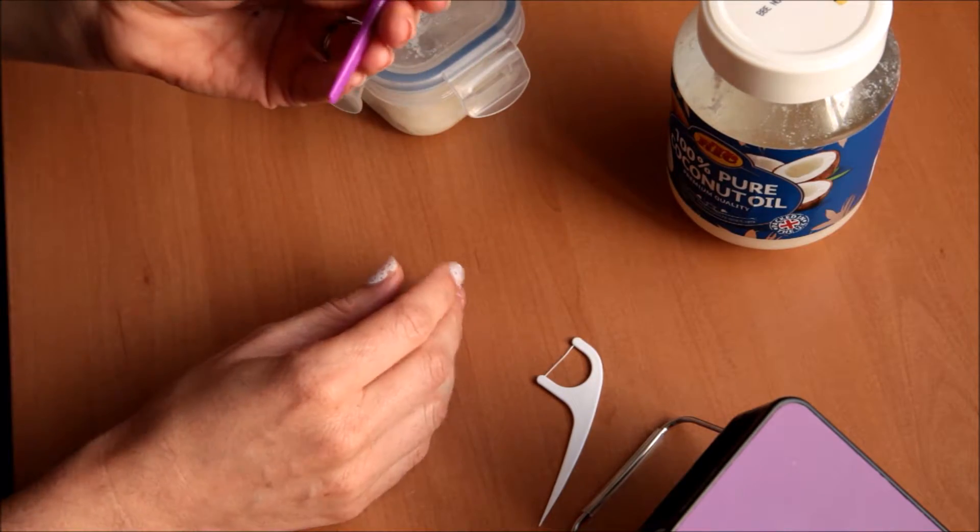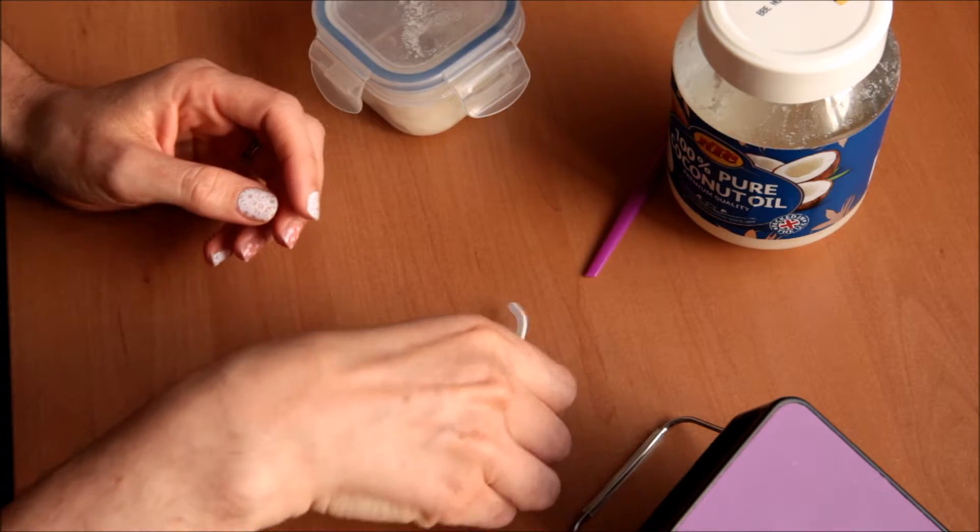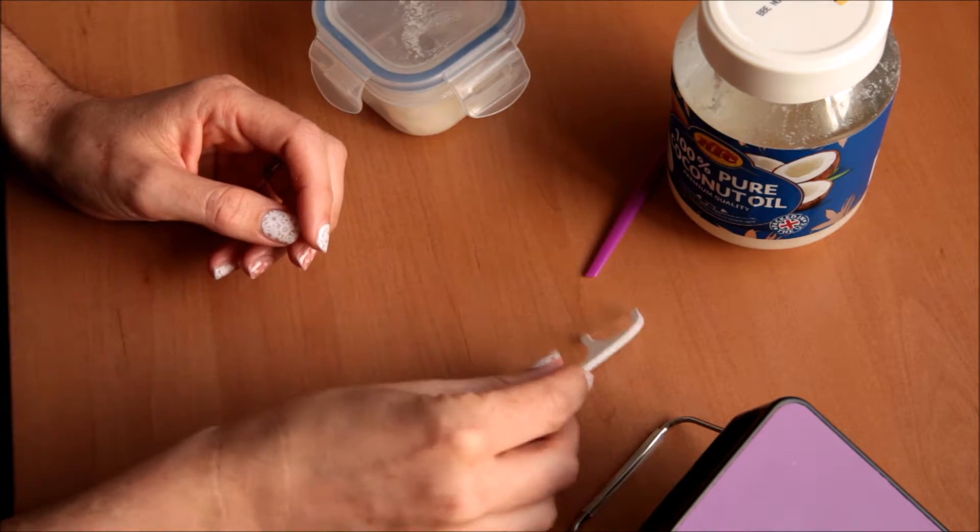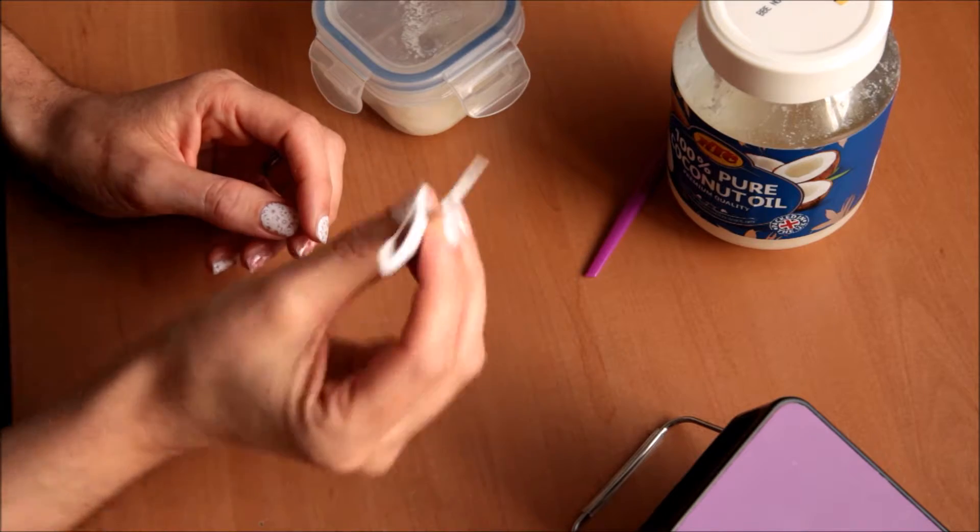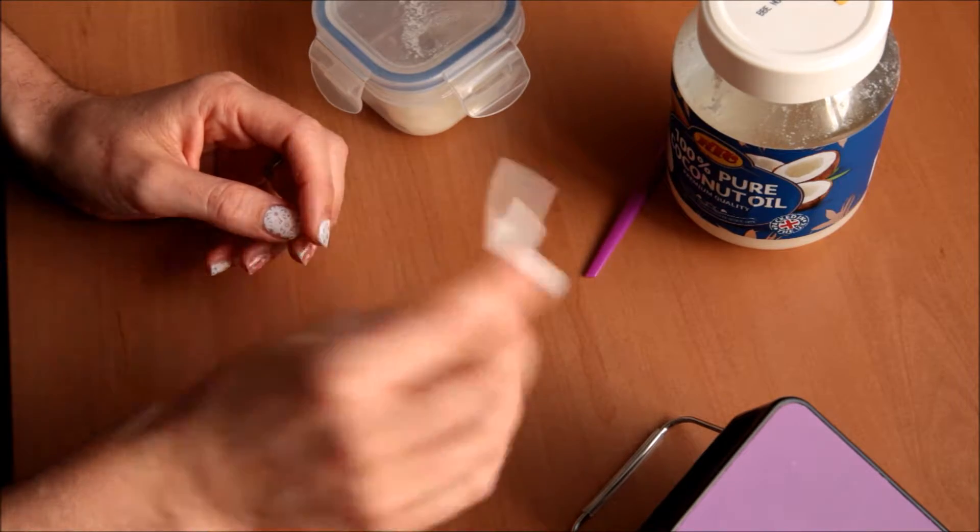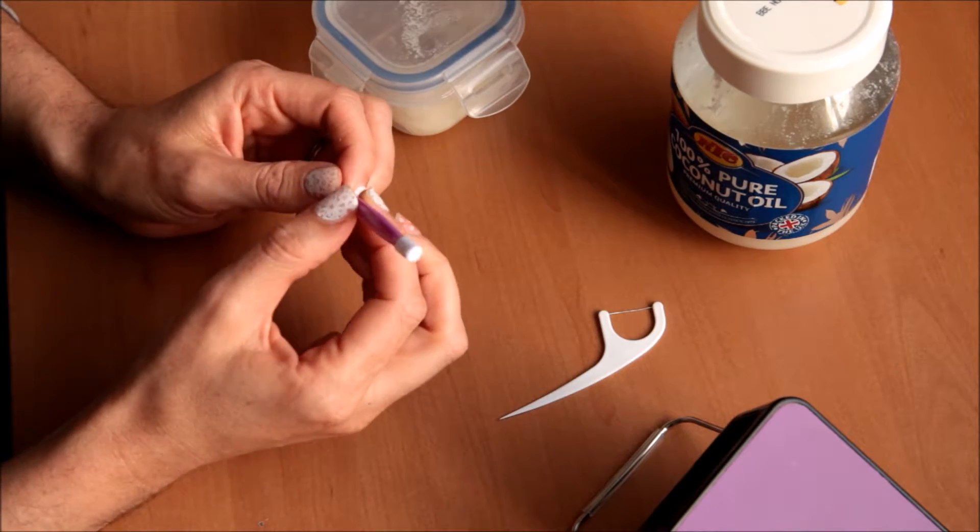I have a rubber cuticle pusher and also tooth floss. Again that's available from the supermarket. This you can get as part of the application kit.